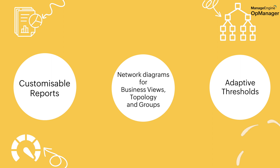You could also create business views, topology maps, and graphical views to represent groups of various departments or sections of your organization — giving you a visual aid to make better business decisions. You can also provide optional information like device location and contact details of the right admin, perhaps phone numbers, in a CSV file.